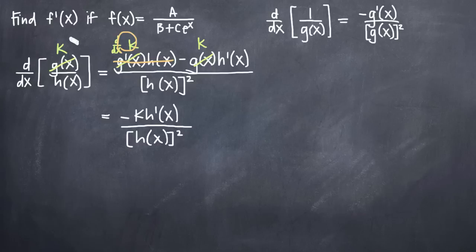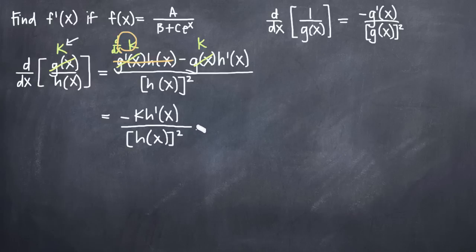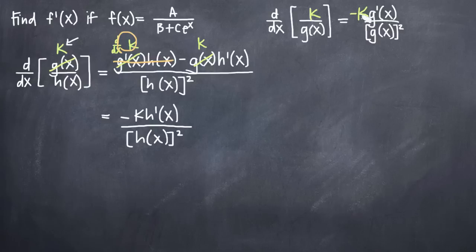When we simplify, we learn that when taking the derivative of a fraction with any constant k in the numerator and a function in the denominator, the derivative is negative k times the derivative of the denominator, all divided by the original denominator squared. This looks exactly like our reciprocal rule formula — the only difference is that instead of limiting ourselves to a value of 1 in our numerator, we've said it can be any constant k. This gives us a lot more flexibility, and this formula will allow us to take the derivative of our function f of x, because we have a constant a in our numerator.